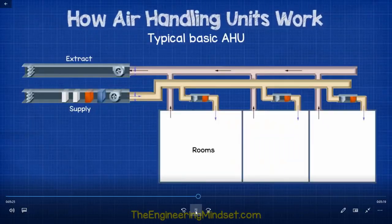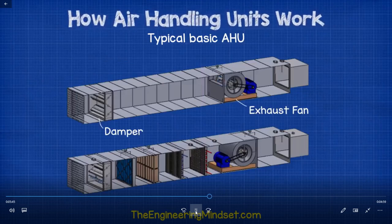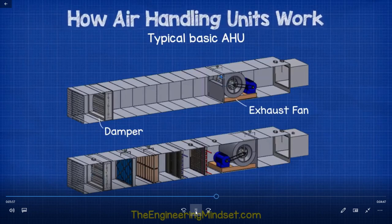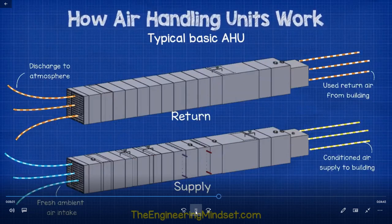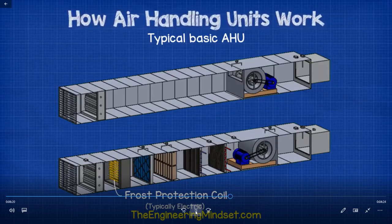The ductwork sends conditioned air around the building to designated areas, and return ductwork brings used air back to a separate part of the AHU. The return AHU in its simplest form has just a fan and a damper — the fan pulls air from around the building and pushes it out of the building to atmosphere, and the damper closes when the AHU turns off. In cold climates where temperatures reach freezing point or close to it, a preheater is found in the fresh air intake — usually an electrical heater that activates around 6°C (42.8°F) to protect the internal components from frost.